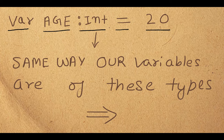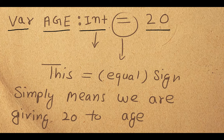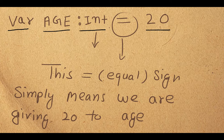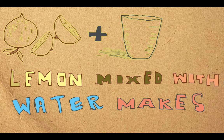I have explained types to you, and the next video will be dedicated entirely to types so things become clear — because this topic is very important and it's a huge topic. Now let's look at the equal sign. This is also very important in programming because it means something a little different. This equal sign simply means we are assigning a value — we are giving 20 to age; age is becoming 20.